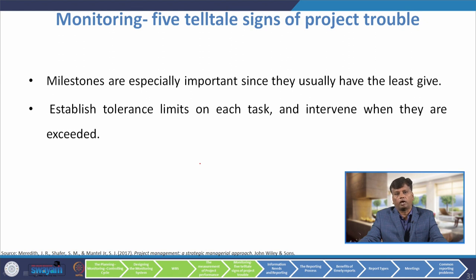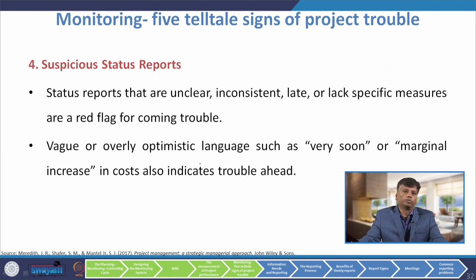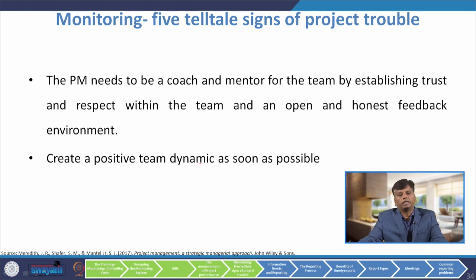If you do not have a detailed project schedule, the chance of the project failing increases exponentially. Milestones are especially important since they usually have the least flexibility. Establish tolerance limits on each task and intervene when they are exceeded. The fourth indicator is suspicious status reports — status reports that are unclear, inconsistent, late and lack specific measures are a red flag. Vague or overly optimistic language such as 'very soon' or 'marginal increase in cost' also indicates trouble ahead. The fifth sign is discord and drama. Unhappy team members can cause major trouble. Meeting minutes can reveal members who are consistently missing, have low participation, or have excessive objections. The project manager needs to be a coach and mentor, establishing trust, respect, and an open feedback environment.